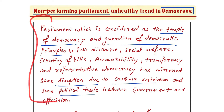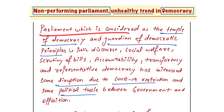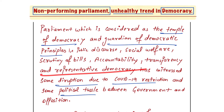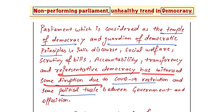Now let us come to the introduction. You should complete the introduction in around 50 to 60 words. You can write something like: 'Parliament, which is considered as the temple of democracy and guardian of democratic principles' — write a little creatively, or improve your academic writing style. The principles include public discourse, social welfare, scrutiny of bills, accountability — how parliament holds the executive accountable — transparency, and representative democracy. India is a representative democracy; we elect MPs who go to parliament and raise our issues and local grievances. Representative democracy has witnessed some disruption — due to COVID-19 restrictions and some political tussle between government and opposition, without naming any particular party.